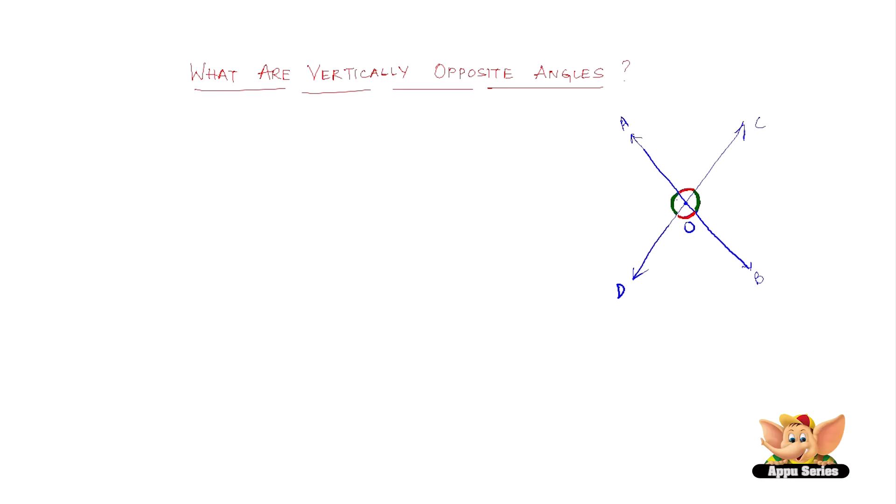If you see these two green angles, they are vertically opposite angles, and so are the two red angles - vertically opposite angles.